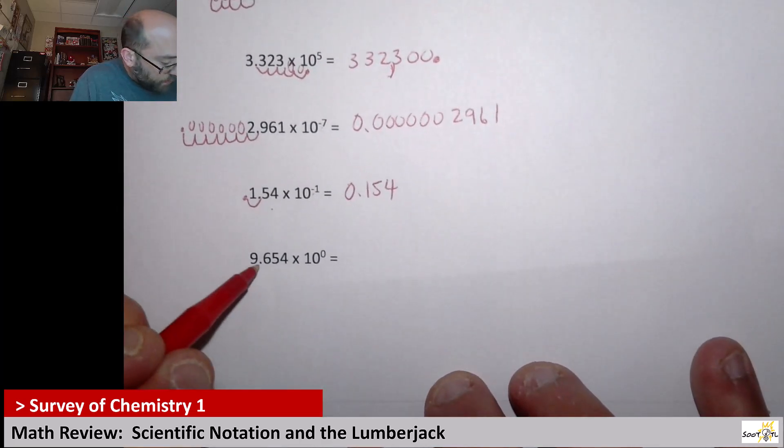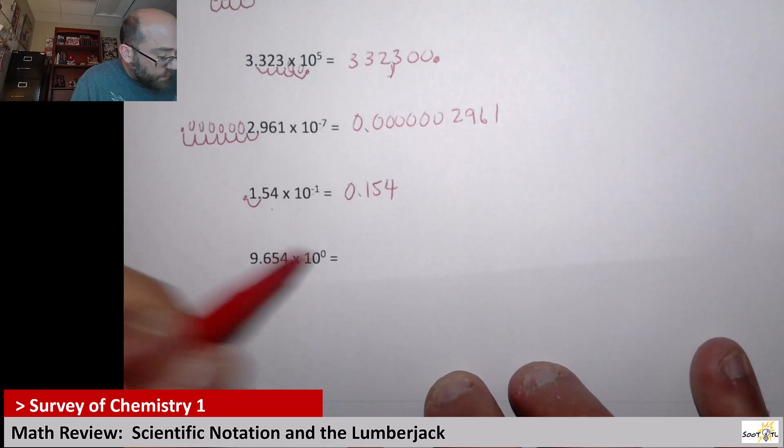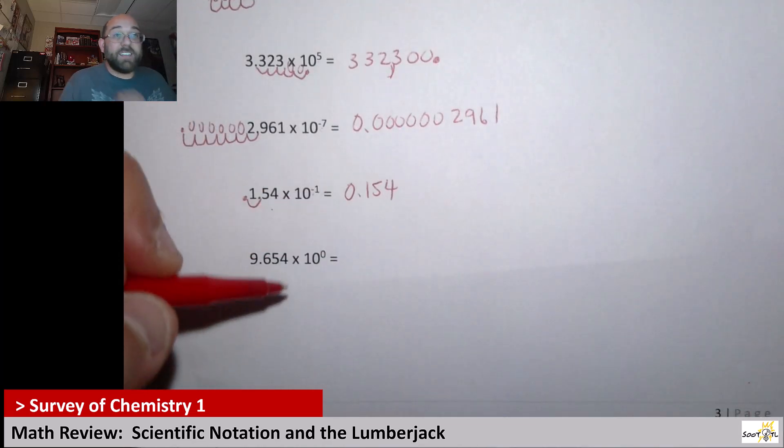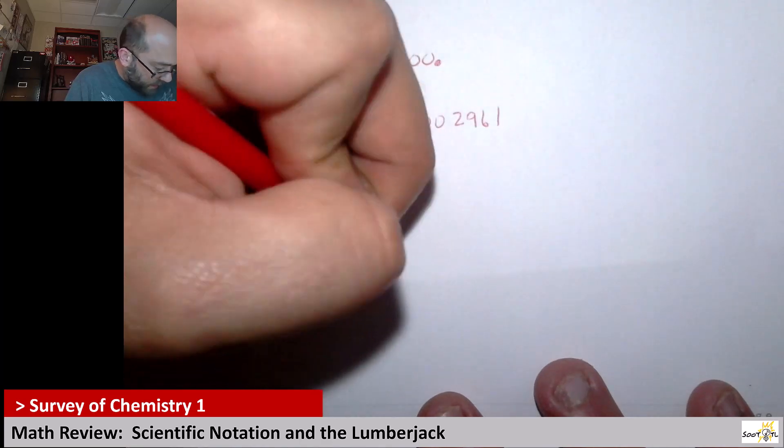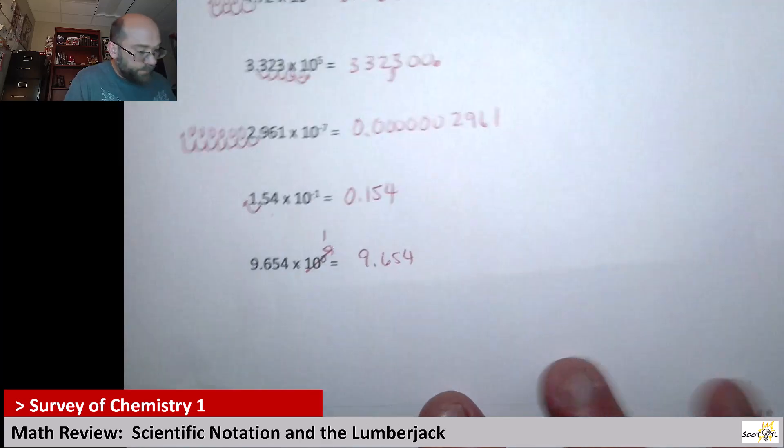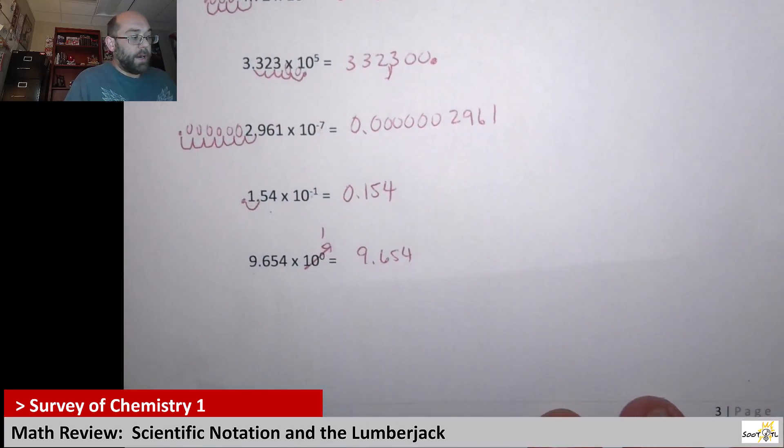Here we've got 9.654 times 10 to the 0. So anything to the 0 power is equal to 1. So I'm saying 9.654 times 1. So that is 9.654. That is what it is.